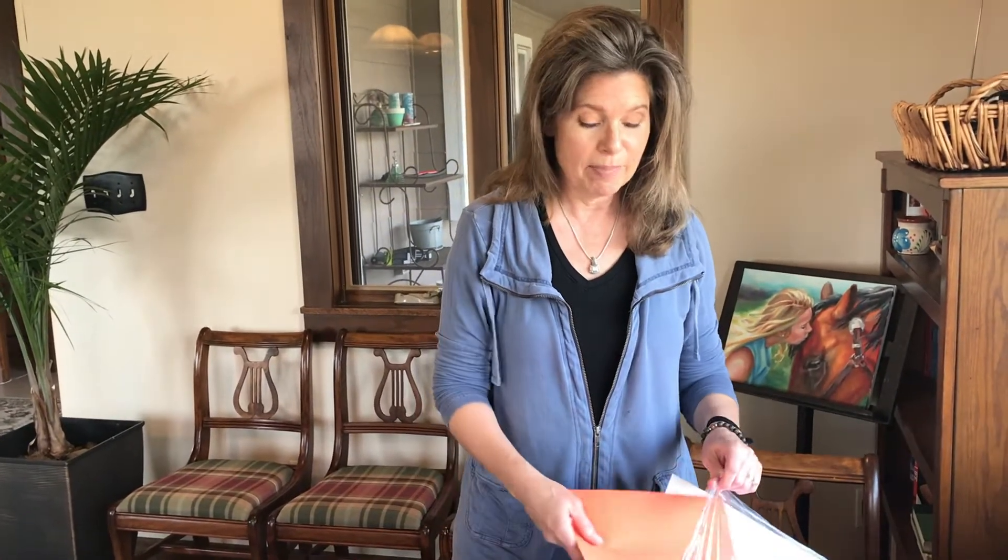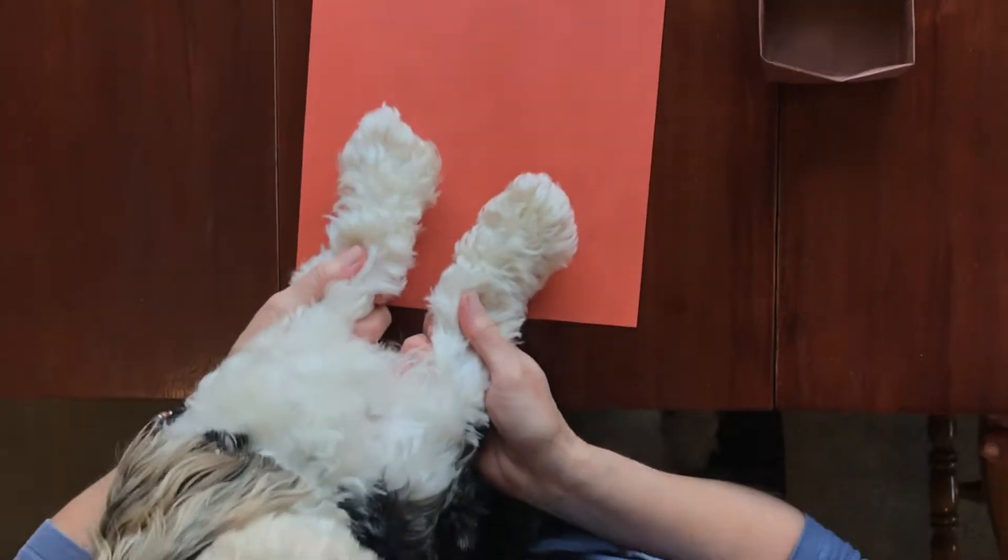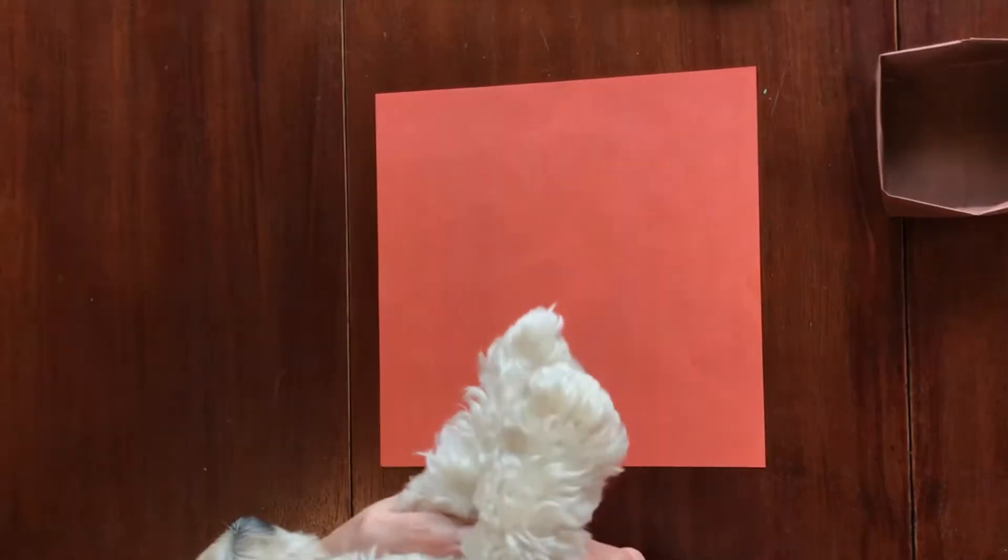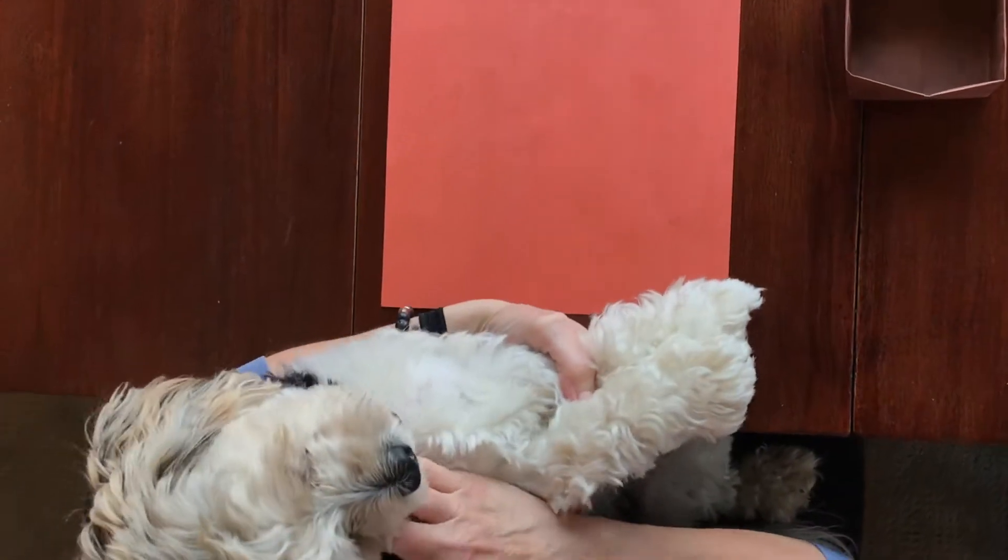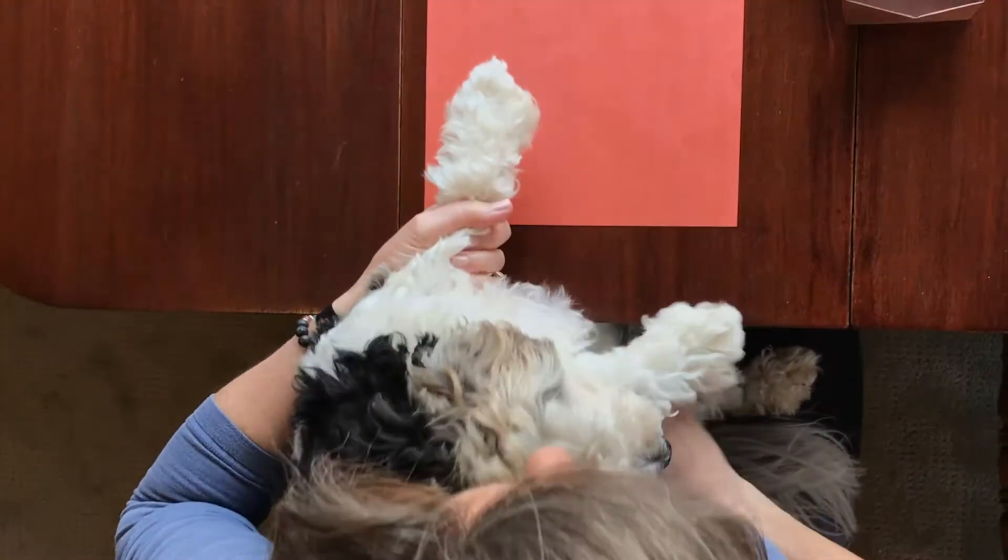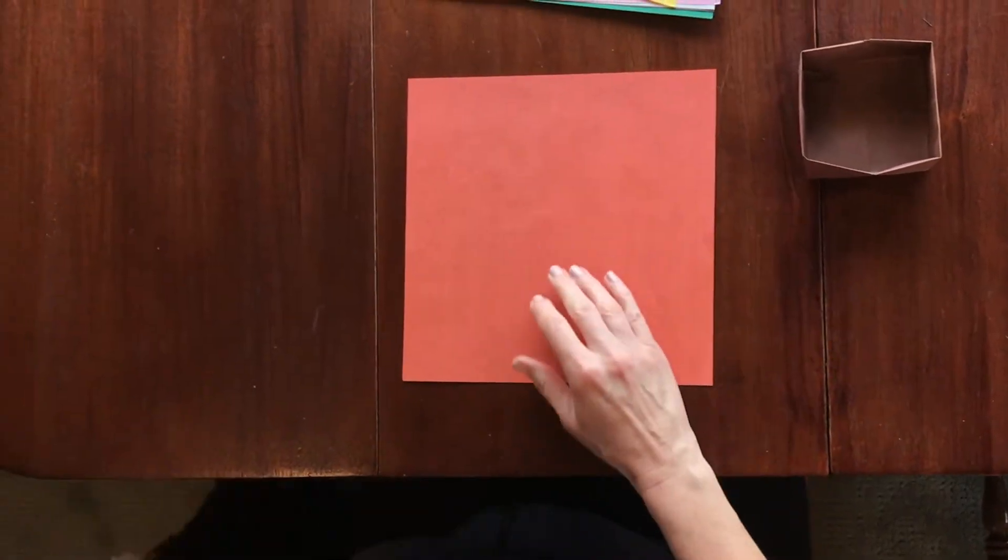But today we're going to do some origami. So in your packet you've got some origami paper. It's perfectly square paper and it's pretty thin so it's easy for folding. And I'm going to show you how to make some boxes. Alright so, here's Bo today. Bo really wanted to be up here and help. So we've got origami paper here and you just need to choose a color.